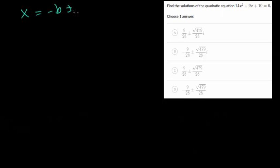We have minus b plus or minus square root b squared minus 4ac all over twice a. And in this case looks like a is 14, b is 9, and c is 10.